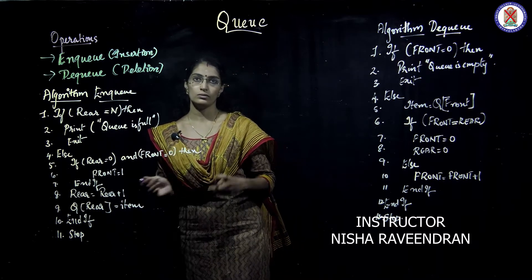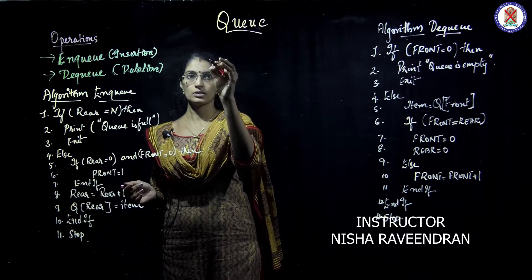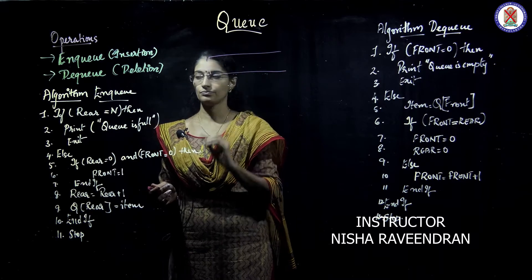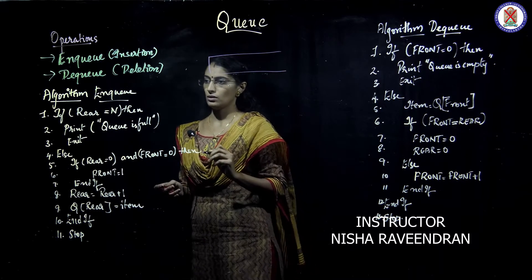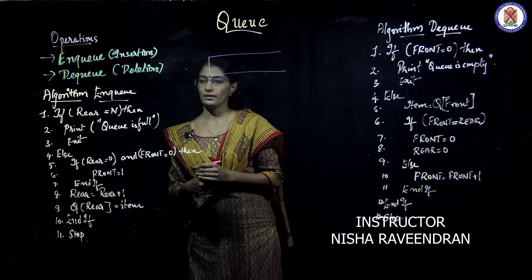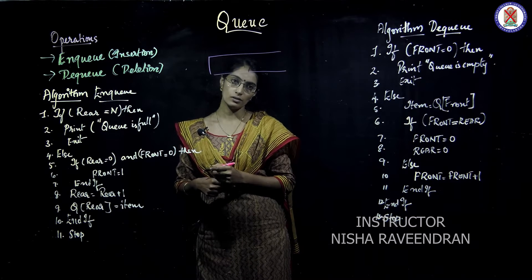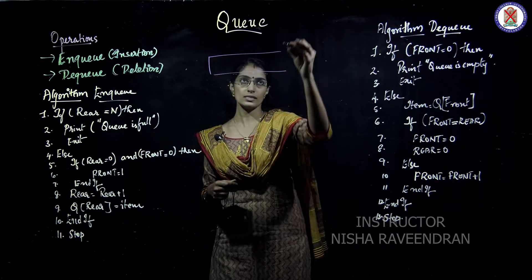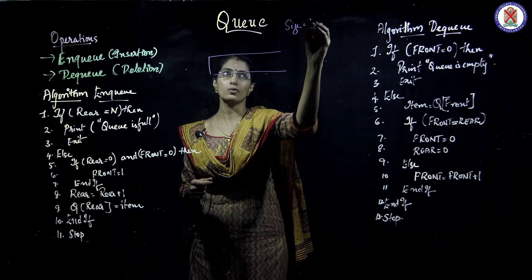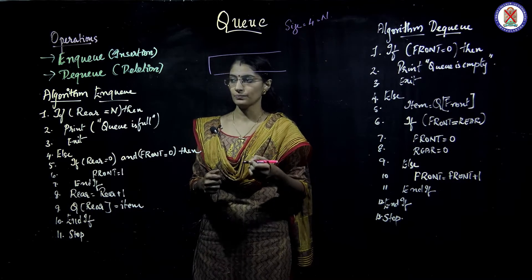Let us start with an example. Suppose we have an array here. If rear is equal to N, the queue is full. Let us take the size of the queue as 4 — that is the value of N.